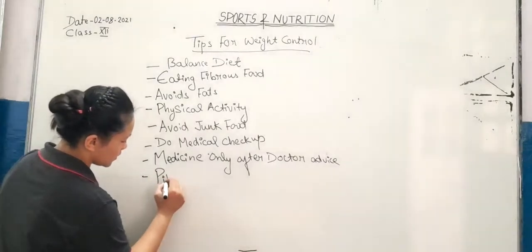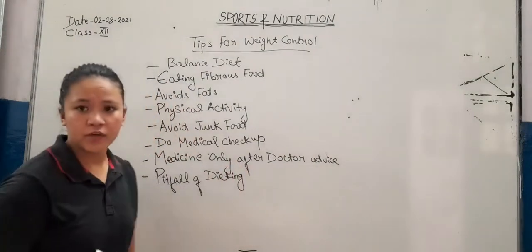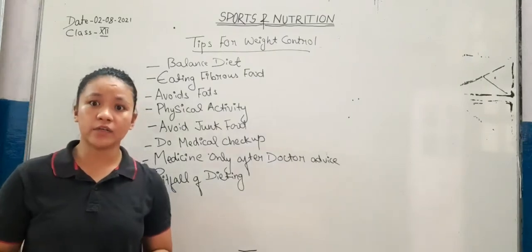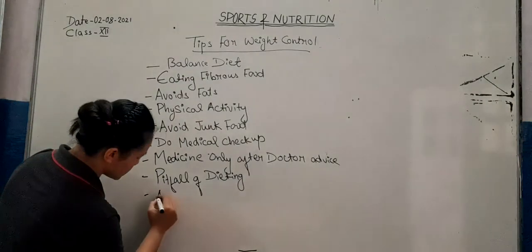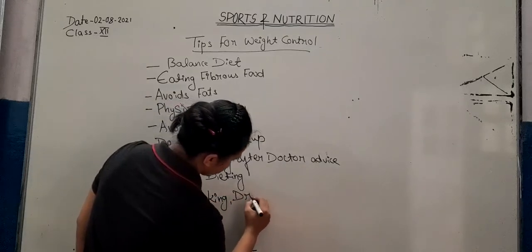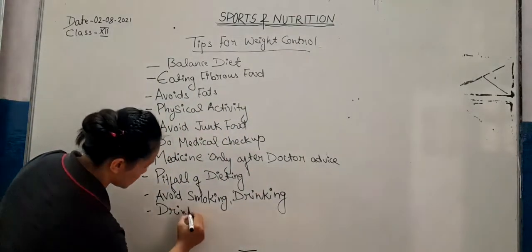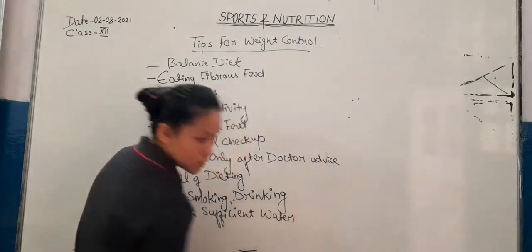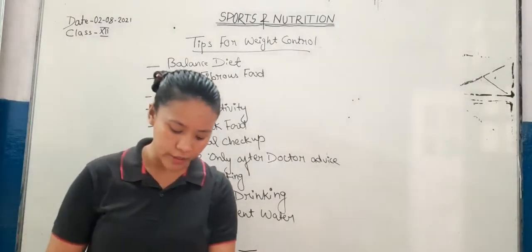Pitfall of dieting: never do pitfall of dieting. People usually, to reduce their weight, start avoiding food, which affects their health. So avoid pitfall of dieting. Also avoid smoking and drinking. Drink sufficient water — if you want to reduce your weight, drink sufficient water, as water also helps in digestion.